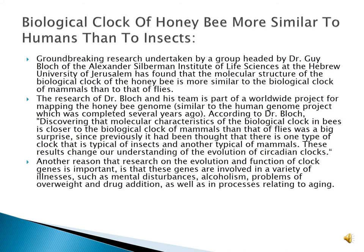The biological clock of the honeybee is more similar to humans. Groundbreaking research on the topic by a group headed by Dr. Guy Bloch of the Alexander Silberman Institute of Life Sciences at the Hebrew University found that the molecular structure of the biological clock of the honeybee is more similar to the biological clock of mammals than to that of flies. Discovering that the molecular characteristics of the biological clock in bees is closer to that of mammals than that of flies was a big surprise, since previously it had been assumed there is one type of clock typical of insects and another typical of mammals. These results change our understanding of the evolution of circadian clocks. Furthermore, these clock genes are involved in a variety of illnesses such as mental disturbance, alcoholism, problems of overweight and drug addiction.